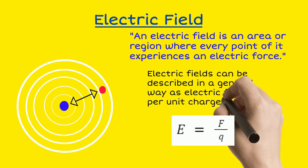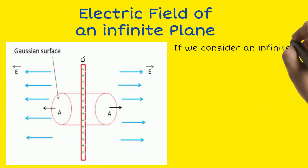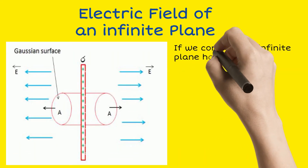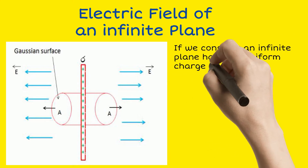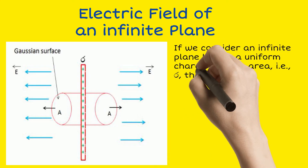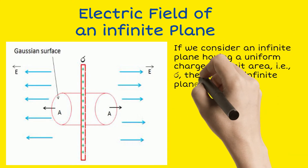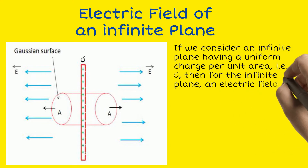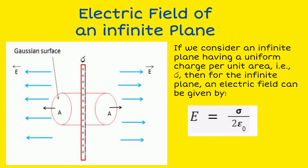Electric field can be described in a general way as electric force per unit charge, that is E is equal to F upon Q. If we consider an infinite plate having uniform charge per unit area — that is sigma — then for an infinite plate, an electric field can be given by E is equal to sigma upon two epsilon zero, as per Gauss's law.